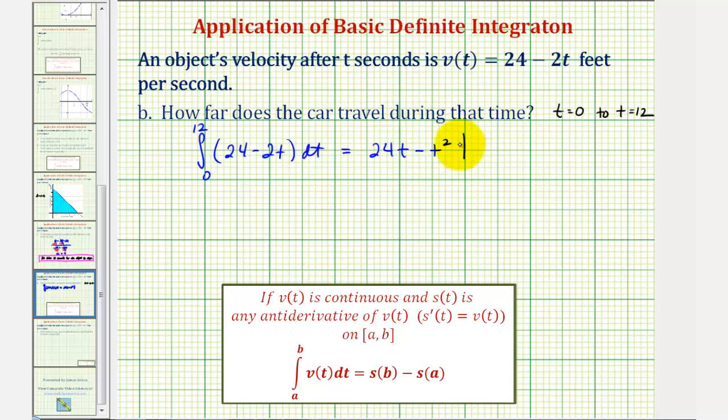And now we'll evaluate this at the upper limit of integration of 12, then the lower limit of integration of 0, and then find the difference. But before we do this, notice that the derivative of 24t - t² is 24 - 2t.